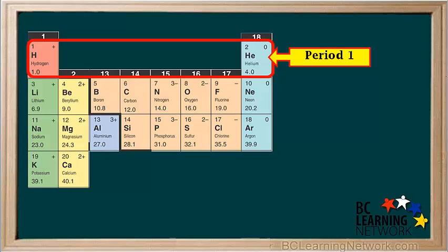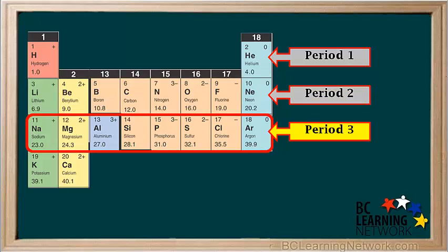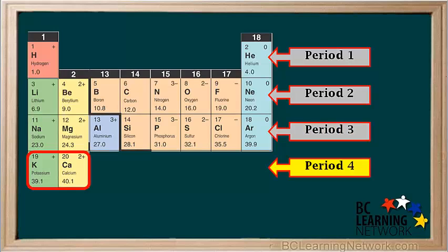Periods are horizontal rows. Period 1 consists of hydrogen and helium. Period 2 runs from lithium to neon. Period 3 runs from sodium to argon. And potassium and calcium are the first two elements in period 4. The model we are going to use is good for the first 20 elements, but does not work well for ones past number 20.